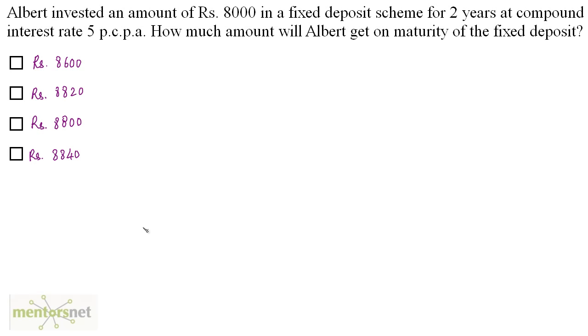Albert invested an amount of Rs. 8000 in a fixed deposit scheme for 2 years at compound interest rate 5% per annum. How much amount will Albert get on maturity of the fixed deposit?